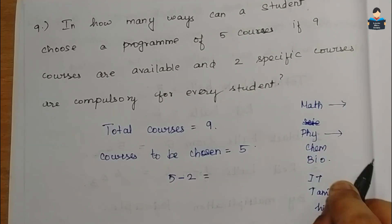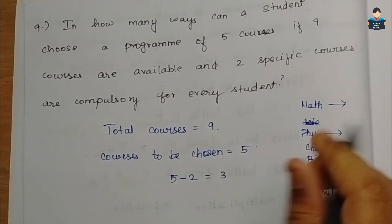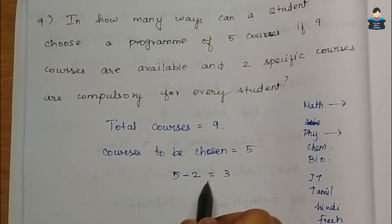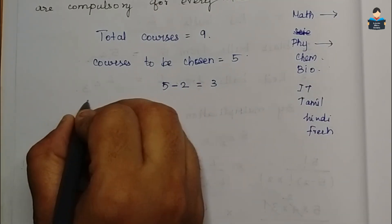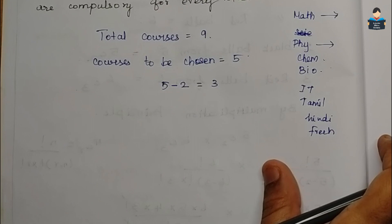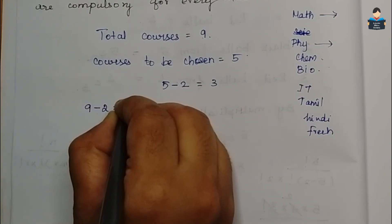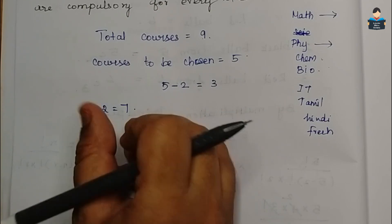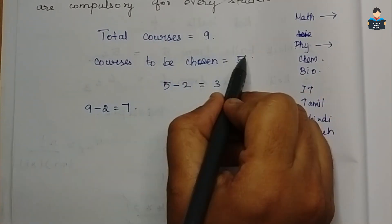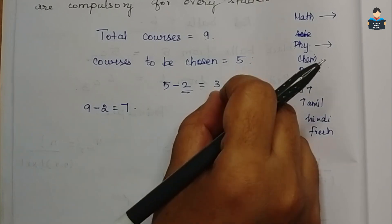For example, Maths and Physics are compulsory, so all students have Maths and Physics. Since 2 courses are already fixed, the student needs to choose only 3 more courses from the remaining 9 minus 2, which is 7 courses.